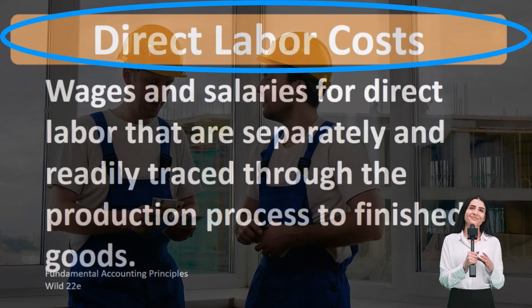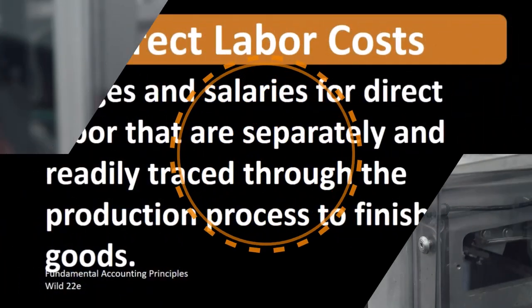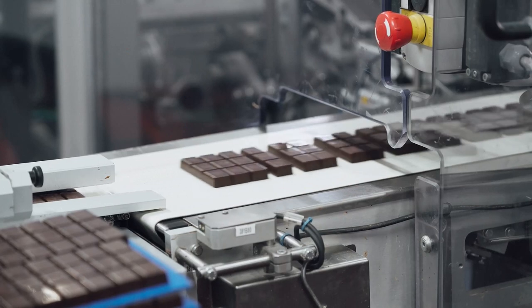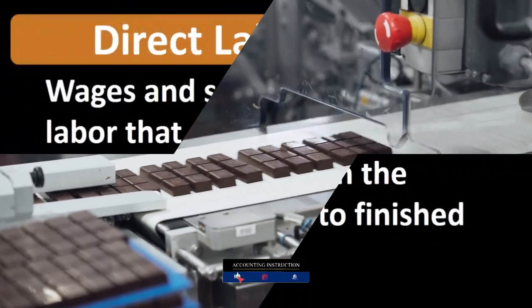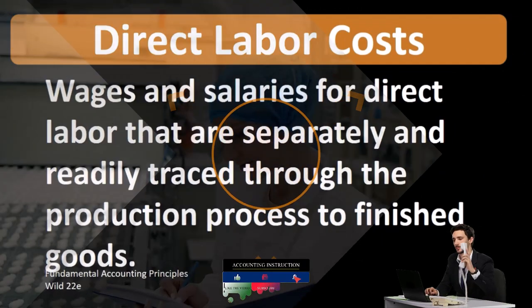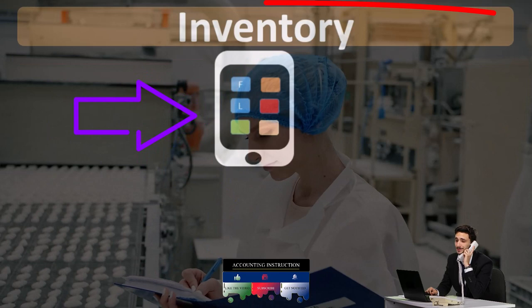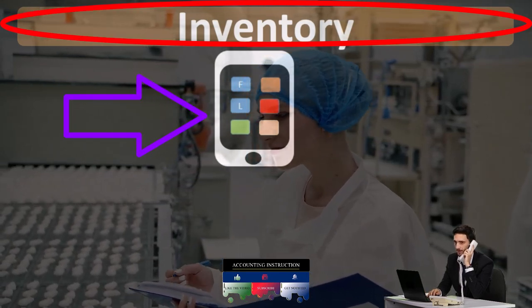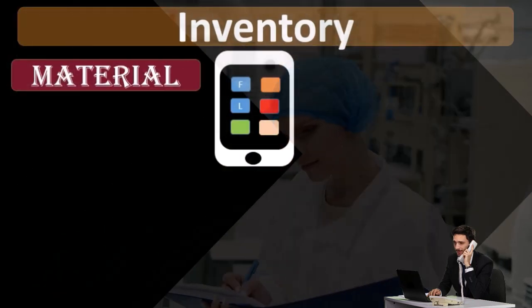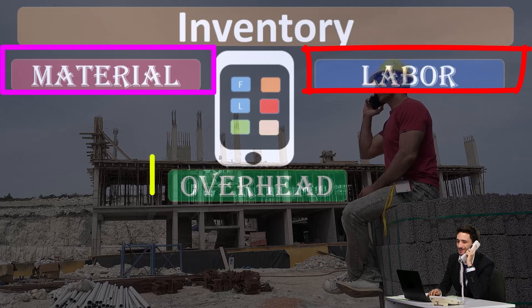When we're considering direct labor costs, we are often considering them in terms of a manufacturing company, comparing and contrasting direct labor to indirect labor. There are a few different ways we can break out costs within the manufacturing process. For example, if we're producing inventory such as a tablet, we could break out the process of costs into categories of the material, the labor, and the overhead.